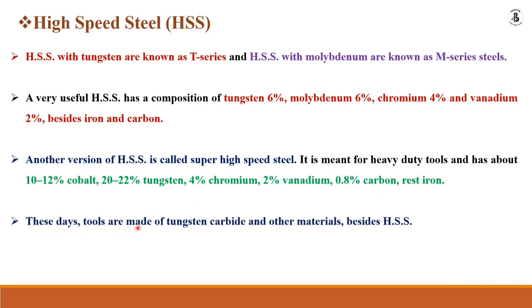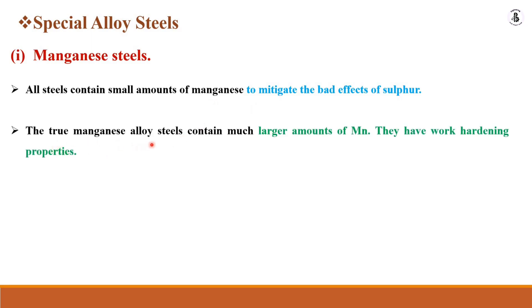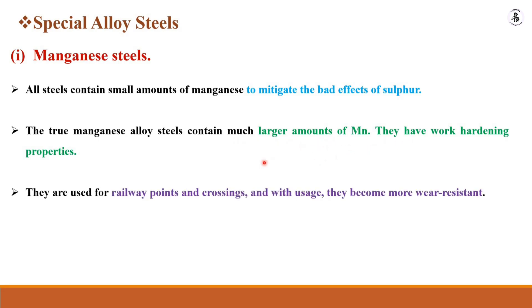These days tools are also made of tungsten carbide and other materials besides HSS. Regarding special alloy steels, manganese steel contains small amounts of manganese to mitigate the bad effects of sulfur. True manganese alloy steels contain much larger amounts of manganese and have work hardening properties. They are used for railway points and crossings, where with usage they become more wear resistant.